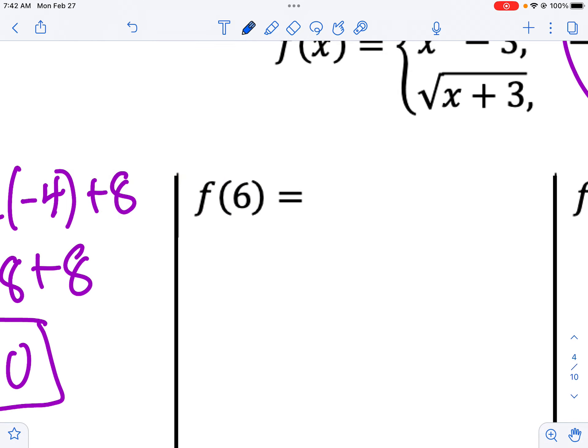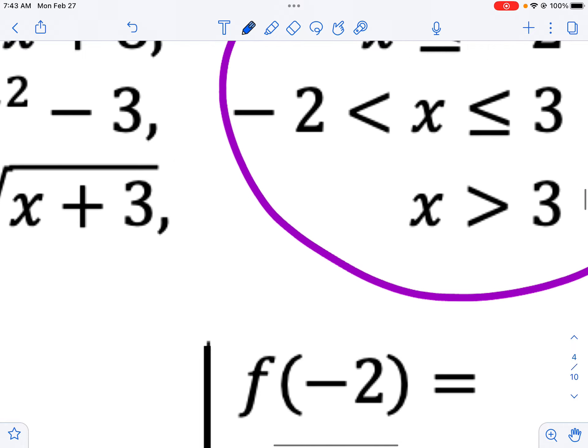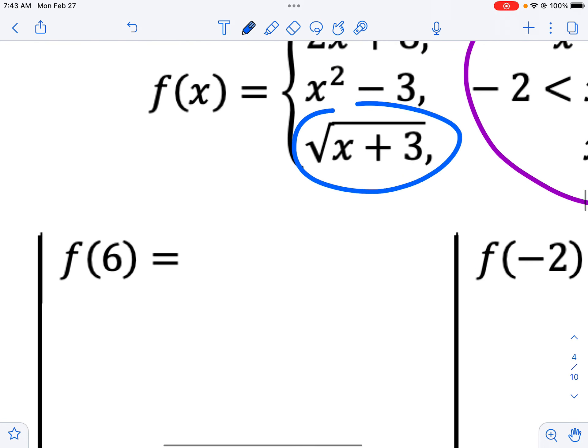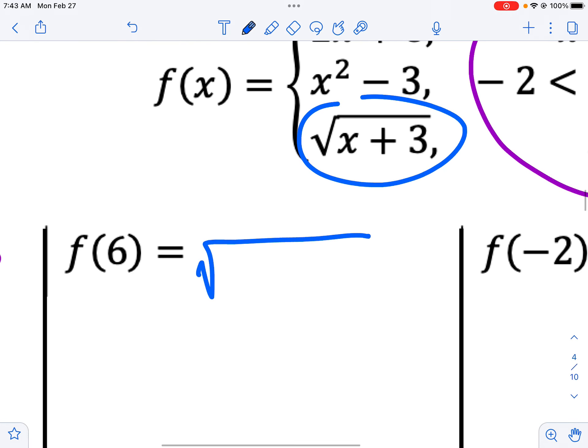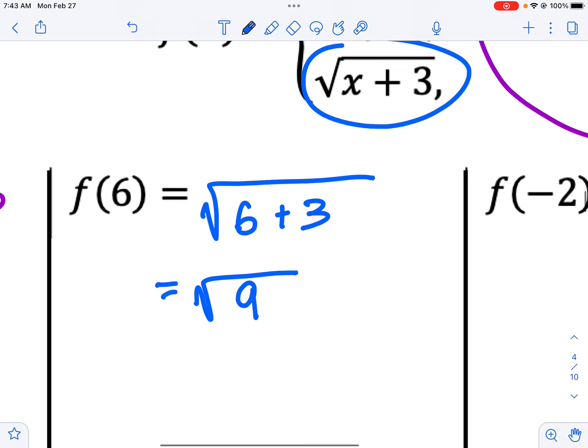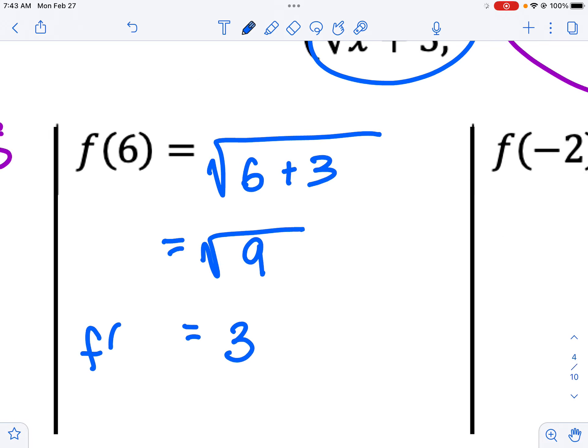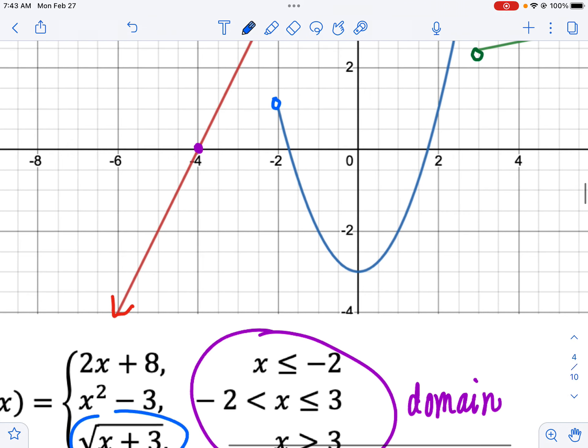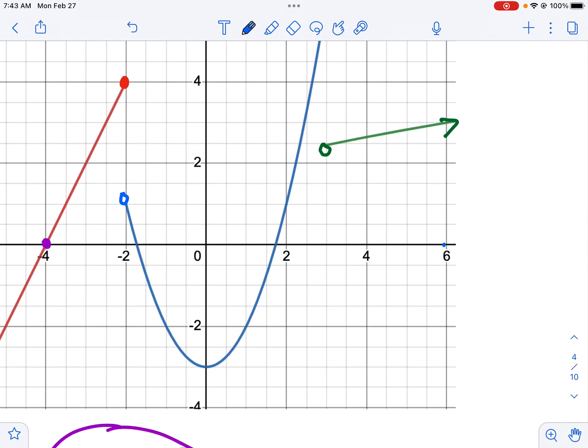Let's try the next one. When f is 6. Okay so 6 is bigger than 3, so we're going to use this function right here. So it will be the square root of, instead of x we'll write the 6. So 6 plus 3. The square root of 6 plus 3 is the square root of 9, which is 3. So we say f of 6 equals 3. Again we can read the graph. We can go over to 6 and then go up to our graph and then over again. And we can see that yes that is at 3 right there.